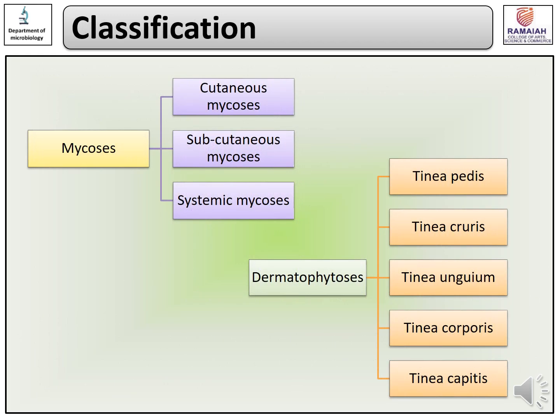When we look at the classification of cutaneous mycosis — note the spelling: M-Y-C-O-S-E-S refers to many fungal infections, and M-Y-C-O-S-I-S refers to a single fungal infection. Mycosis is classified into three types: cutaneous mycosis, subcutaneous mycosis, and systemic mycosis.